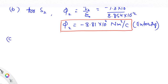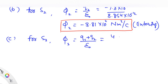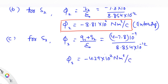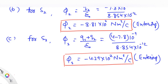For the third part, for surface s3, φ3 is given by the sum of enclosed charges (q1 + q2) divided by ε₀. This is (4 − 7.8) nanocoulombs × 10⁻⁹ divided by 8.854×10⁻¹². So φ3 is calculated to be −4.29×10² N·m²/C. It is negative, so the flux is entering into the surface. This is the answer for the third part.